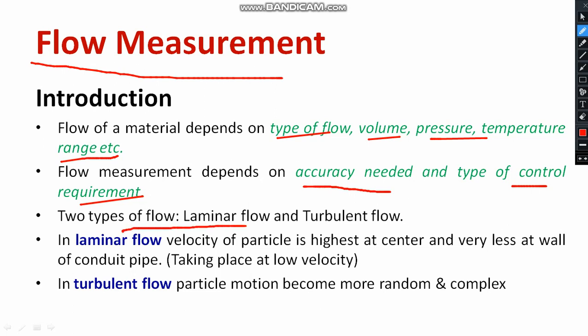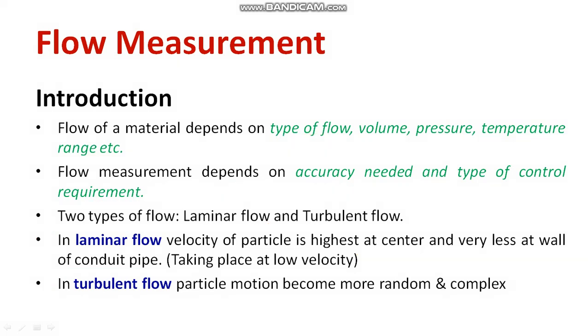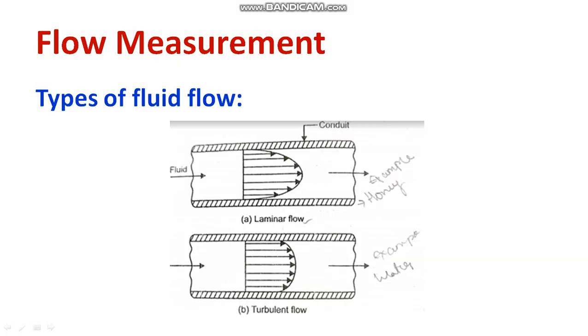There are two types of flow: laminar flow and turbulent flow. In case of laminar flow, the velocity of particle is maximum at the center and very less at the conduit or wall. If I talk about turbulent flow, the particle motion becomes more random and complex.